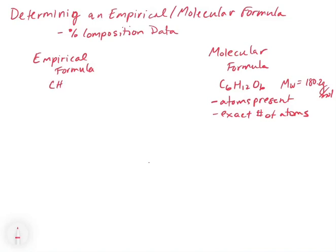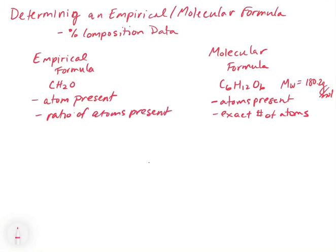The empirical formula for glucose is CH2O. We do get the information about the atoms that are present, but instead of getting the exact number of atoms, we get the ratios of atoms. In CH2O, hydrogen is in a 2-to-1 ratio with respect to carbon and 2-to-1 with respect to oxygen.